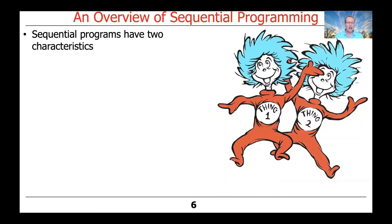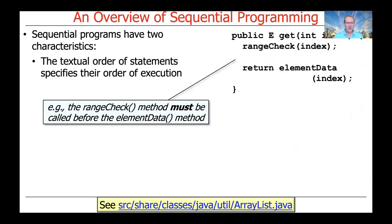There are two primary characteristics of sequential programs that are important in our discussion. What's important is to be able to compare and contrast sequential programming from concurrent programming, which we will do in just a moment. The first characteristic is that the textual order of statements specifies their order of execution, or at least their logical order of execution.